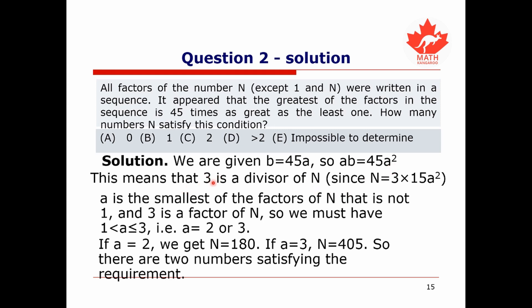Since n equals 45a squared, 3 is a divisor of n. Because a is the smallest factor of n other than 1 and 3 is a factor of n, a must be less than or equal to 3. The only positive factors less than or equal to 3 other than 1 are 2 or 3. If a equals 2, we get n equals 180. If a equals 3, we get n equals 405. So there are two different numbers n satisfying the requirement, and the answer is 2.